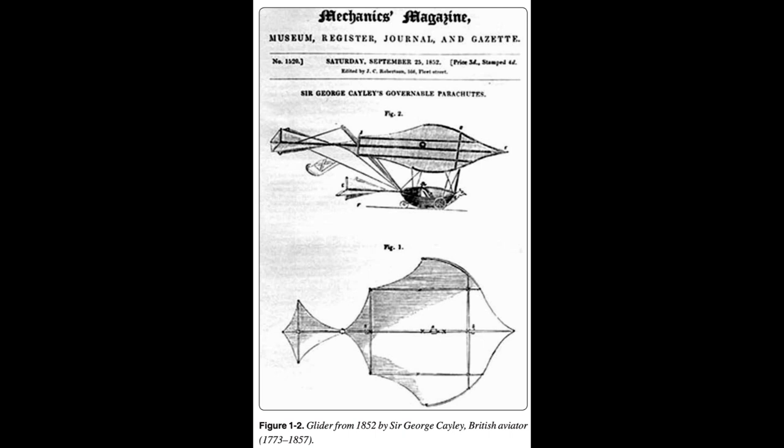The father of aerial navigation, Cayley discovered the basic principles on which the modern science of aeronautics is founded, built what is recognized as the first successful flying model, and tested the first full-size man-carrying airplane. For the half-century after Cayley's death, countless scientists, flying enthusiasts, and inventors worked toward building a powered flying machine.